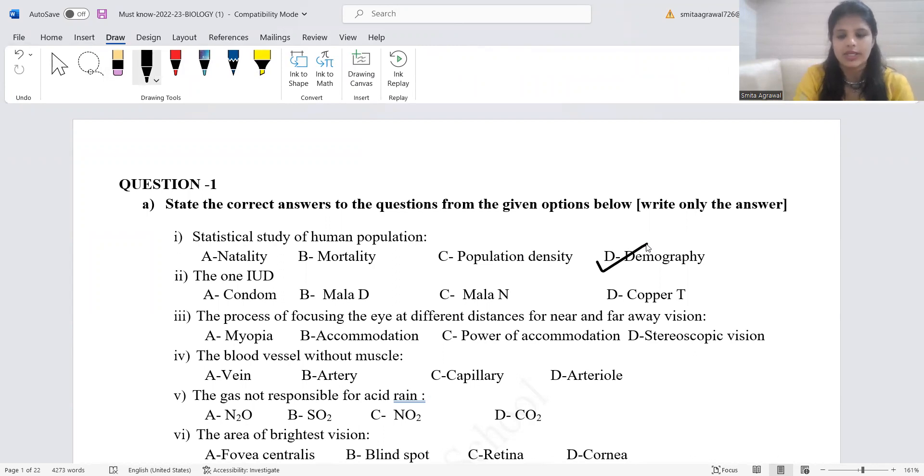First question is statistical study of human population. The correct answer is demography. IUD, intrauterine device, the correct answer is copper-T. The process of focusing the eye at different distances for near and far away vision. Here the correct answer is accommodation. You may get confused with the option power of accommodation. Power of accommodation will be the answer when the question is the ability of eye to focus nearby and far off objects. The blood vessel without muscle, that is capillary.